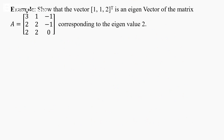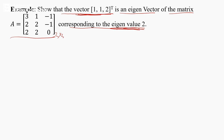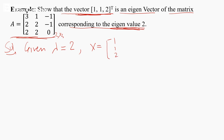Now, using a property, we have to show that the vector [1, 1, 2]ᵀ is an eigenvector of the given 3×3 matrix corresponding to eigenvalue 2. We are given eigenvalue λ = 2 and the vector x = [1, 1, 2]ᵀ. If this is truly an eigenvector, it should satisfy the property Ax = λx.